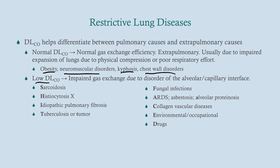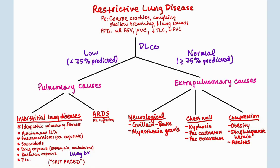With a low DLCO, we're looking at a disorder of the alveolar-capillary interface. The number one cause is idiopathic pulmonary fibrosis, the most common cause of interstitial lung disease. Getting the DLCO is really important once you've determined the patient has a restrictive pattern. If they've got a low DLCO, it's a pulmonary cause — either interstitial lung disease or ARDS. ARDS typically presents in a patient with a history of significant infection, which should be apparent from the clinical history.